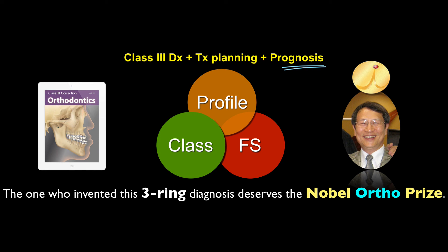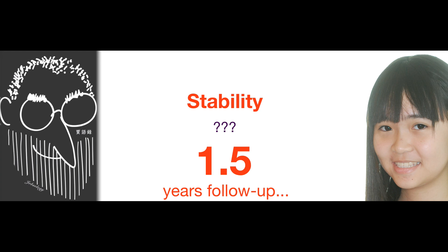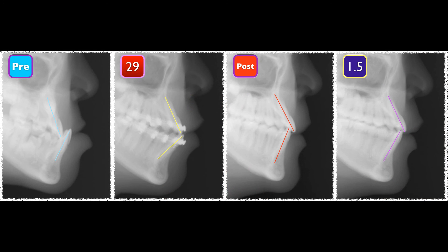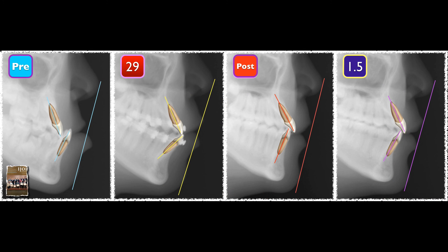So if you want to learn more about the 3-3 circle, you can look at his work — his work is amazing. Is that result stable? This is a child, yes, I know. One and a half years later, look at the profile and pay attention to the inclination of the incisor — held pretty well.